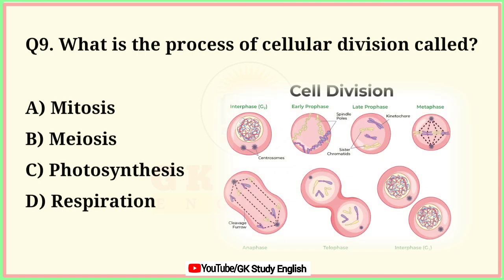Question number 9. What is the process of cellular division called? A. Mitosis. B. Meiosis. C. Photosynthesis. D. Respiration. Correct answer is option A. Mitosis.